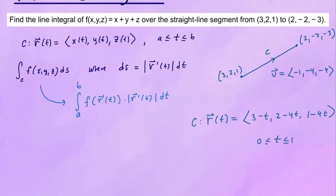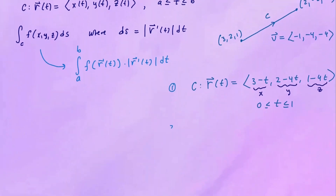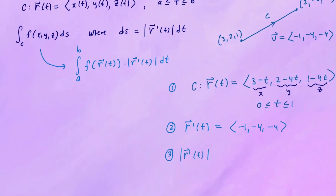Now let's evaluate F at these components — substituting x of T, y of T, and z of T into the function. That's step one. For step two, the derivative R prime of T is simply the direction vector: negative 1, negative 4, negative 4. The magnitude of R prime of T is the square root of negative 1 squared plus negative 4 squared plus negative 4 squared, which is the square root of 1 plus 16 plus 16, giving us the square root of 33.